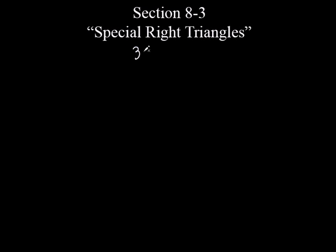Here we are at the second part of Section 8.3, still called Special Right Triangles, but we're going to do a different type of triangle. Earlier we did a 45-45-90 triangle. This time we're doing a 30-60-90 triangle — a right triangle where the other two angles are 30 degrees and 60 degrees.